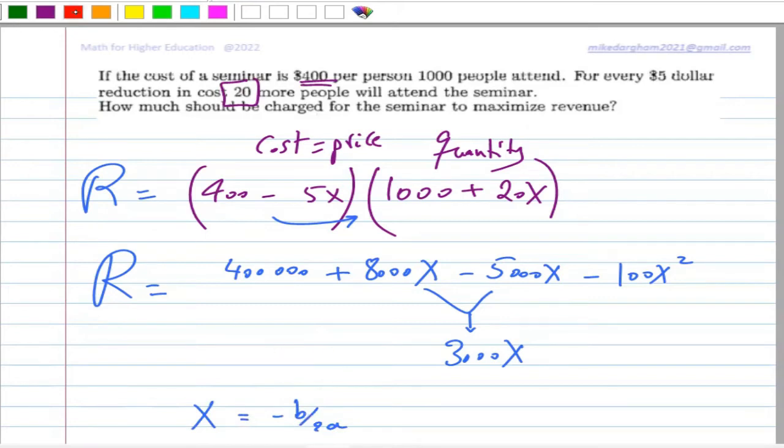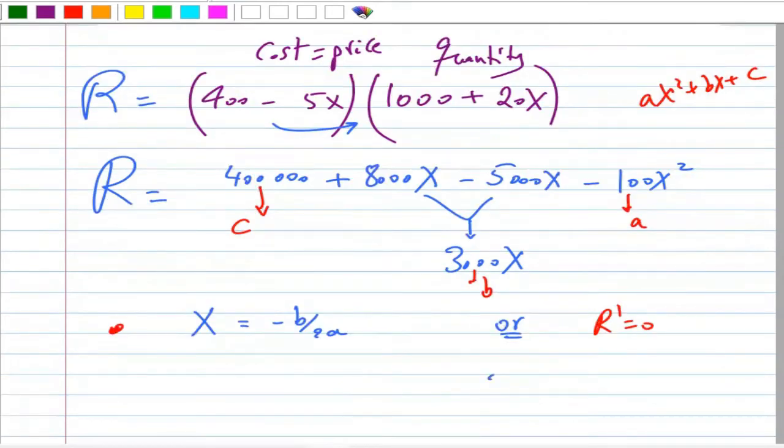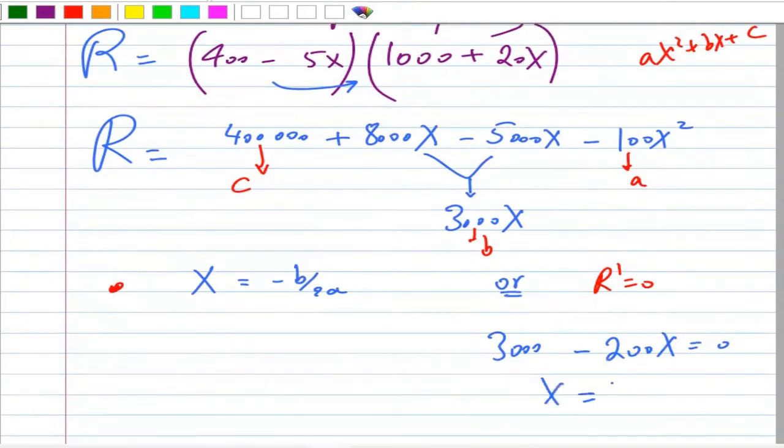So this is the c value, you know that is the b value, and this is the a value. It's x squared, the bx plus c, right? It would be 3000 minus 200x equals 0. This leads to x equal 15.